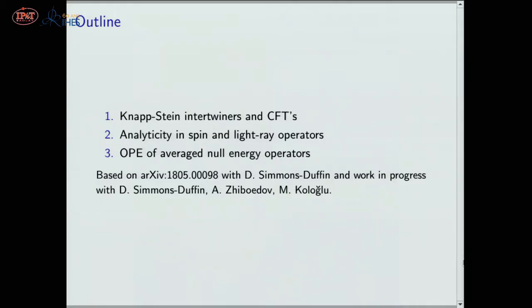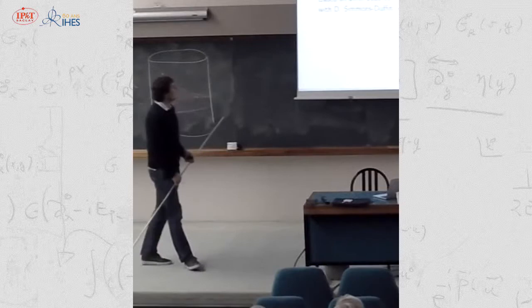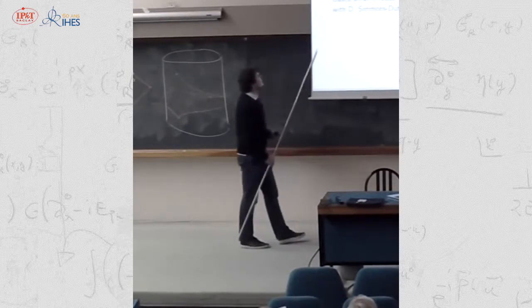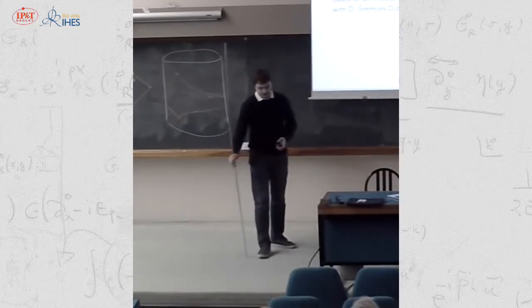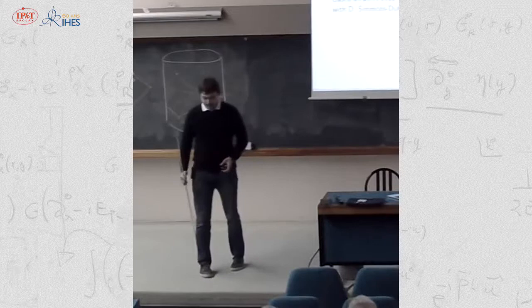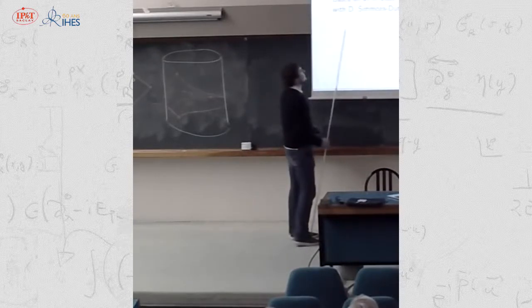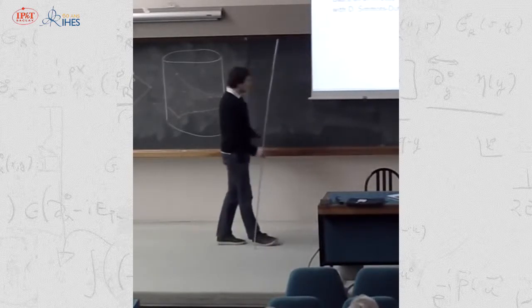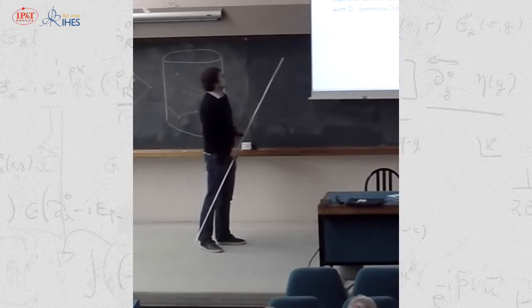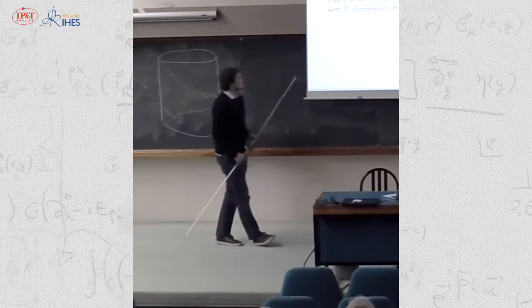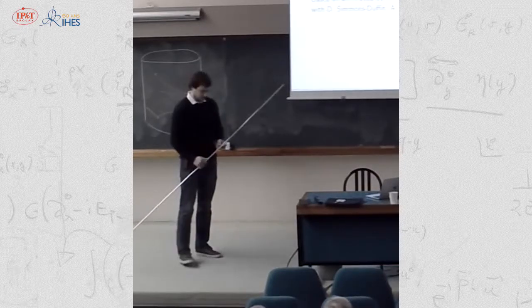The plan of my talk will be as follows: first I'll talk about Knapp-Stein intertwining operators and some role they can play in conformal field theories. Then I will discuss how we can use these tools — the Knapp-Stein intertwiners — to study the question of analyticity in spin in conformal field theory. If we have time, we will use this formalism to study the operator product expansion of some non-local operators. The first two parts are based on a paper published this summer with David Simmons-Duffin, and the last part is based on work in progress with David Simmons-Duffin, Sasha Zhiboedov, and Murat Kologlu, who is a graduate student at Caltech.